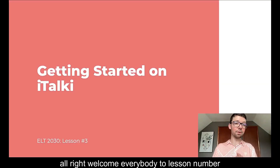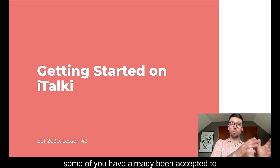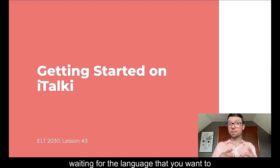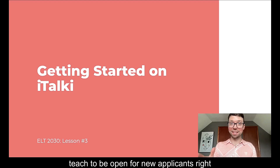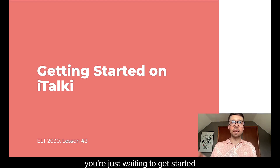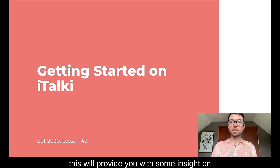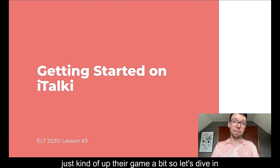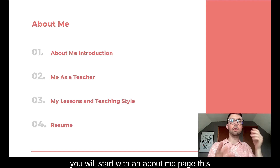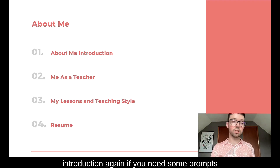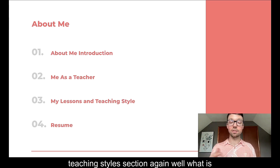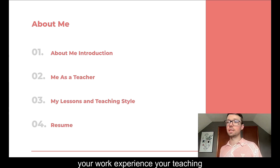You will start with an About Me page, which includes an introduction, a 'Me as a Teacher' section, a 'My Lessons and Teaching Styles' section, and your resume with work and teaching experience. Setting up your lessons: there will be a part of your profile where you set up different types of lessons. Professional teachers can have six different lesson types; community tutors can only have three. This is one of the reasons people want to become professional teachers — it can make you more marketable and attract more students looking for specific categories of classes.